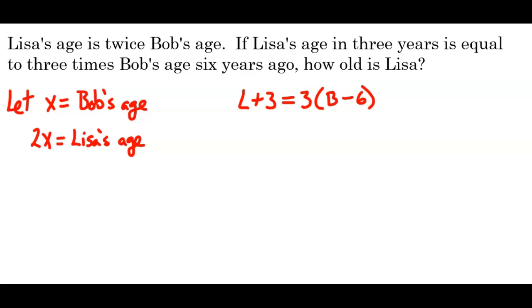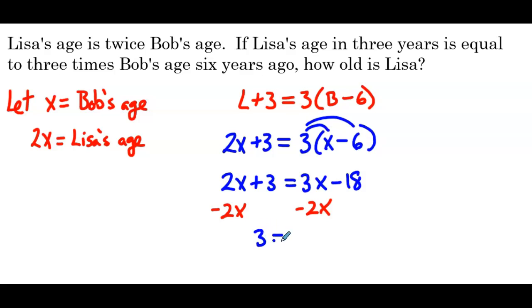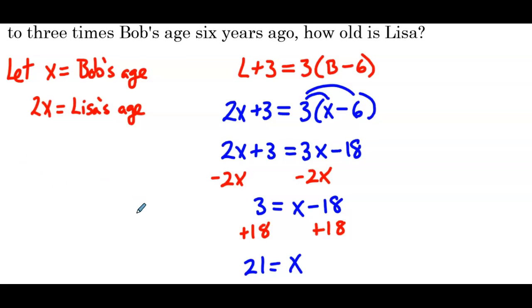Our equation is 2x plus 3 equals 3 times x minus 6. Distributing the 3: 2x plus 3 equals 3x minus 18. Subtracting 2x from both sides: 3 equals x minus 18. Adding 18 to both sides gives 21 equals x. Lisa's age is 2 times 21, so Lisa is 42 years old.